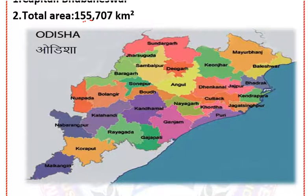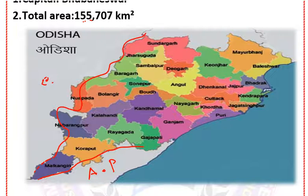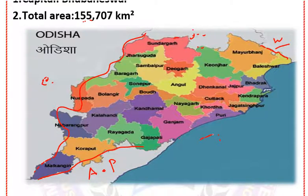The border of Odisha touches the border of Andhra Pradesh. The border of Odisha also touches Chhattisgarh, whose capital is Atal Nagar. The border of Odisha touches Jharkhand and West Bengal. To the south of Odisha lies the Bay of Bengal coast.